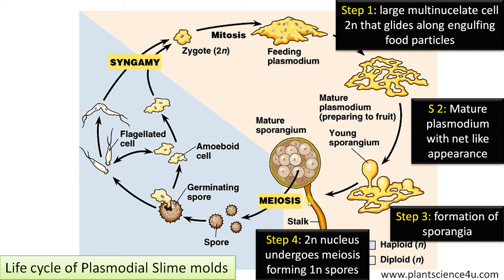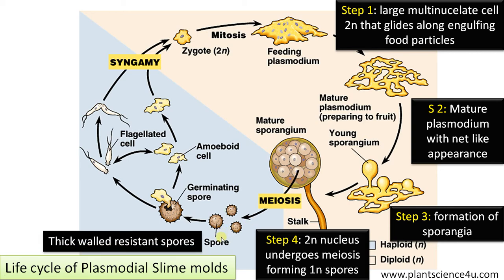Step 4: The diploid nucleus inside the sporangium undergoes meiosis, forming haploid spores. These haploid spores are thick-walled and highly resistant — they can withstand unfavorable conditions and remain dormant for a long time, waiting for favorable conditions to return.